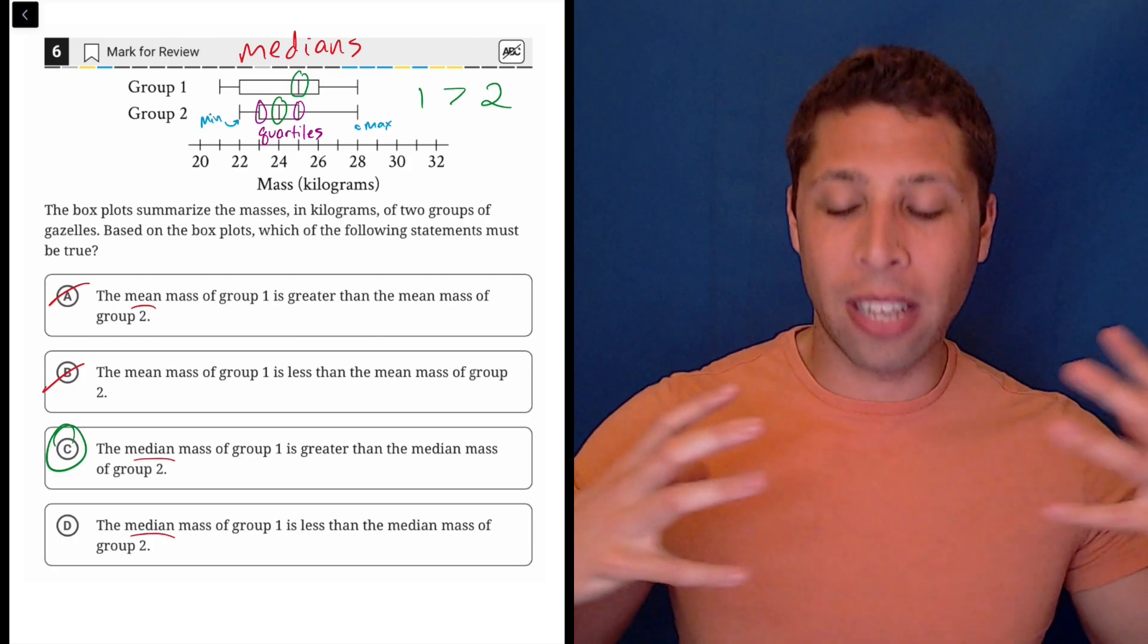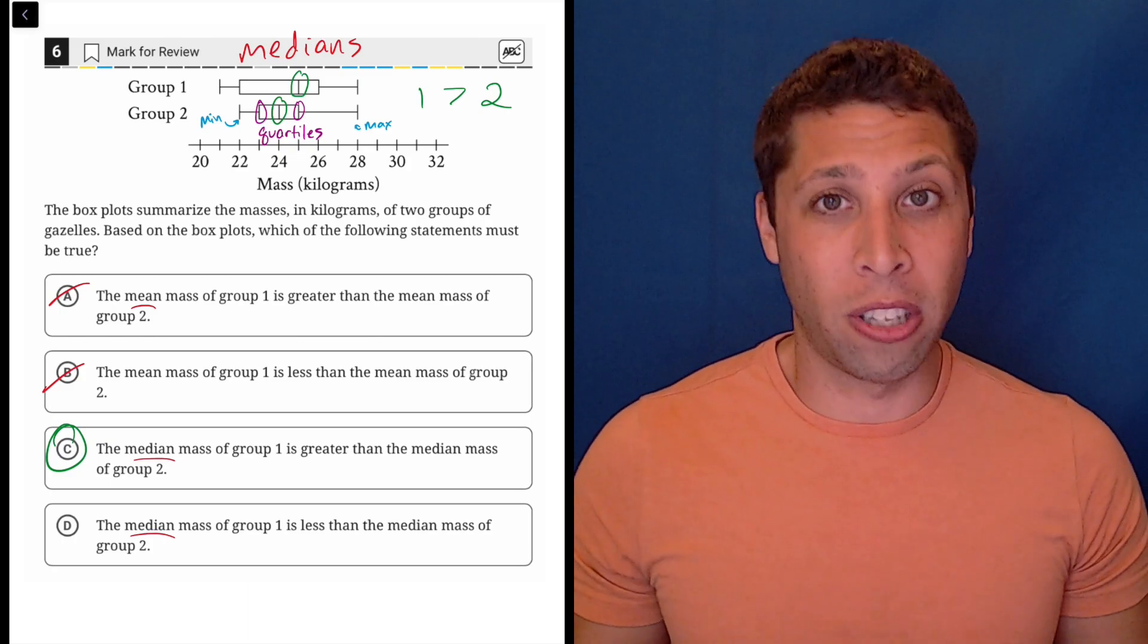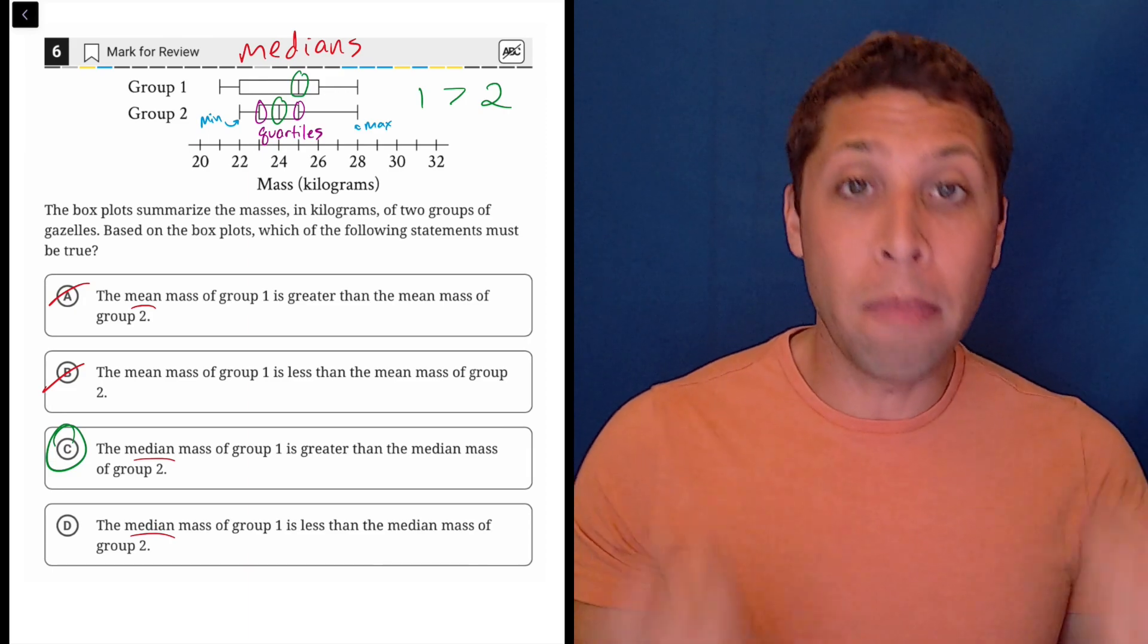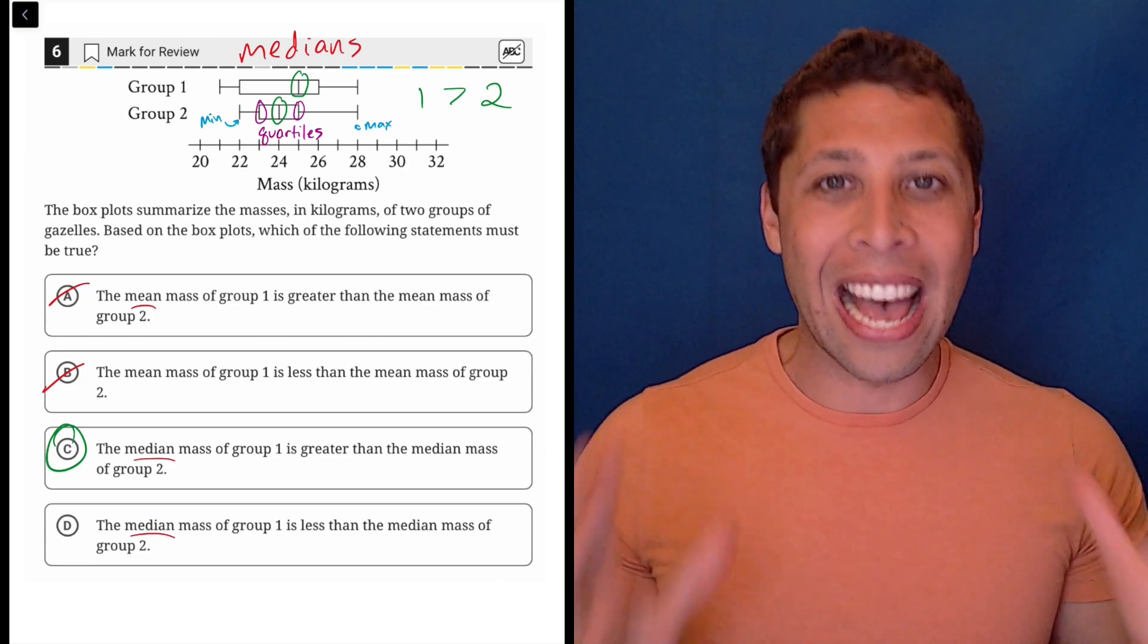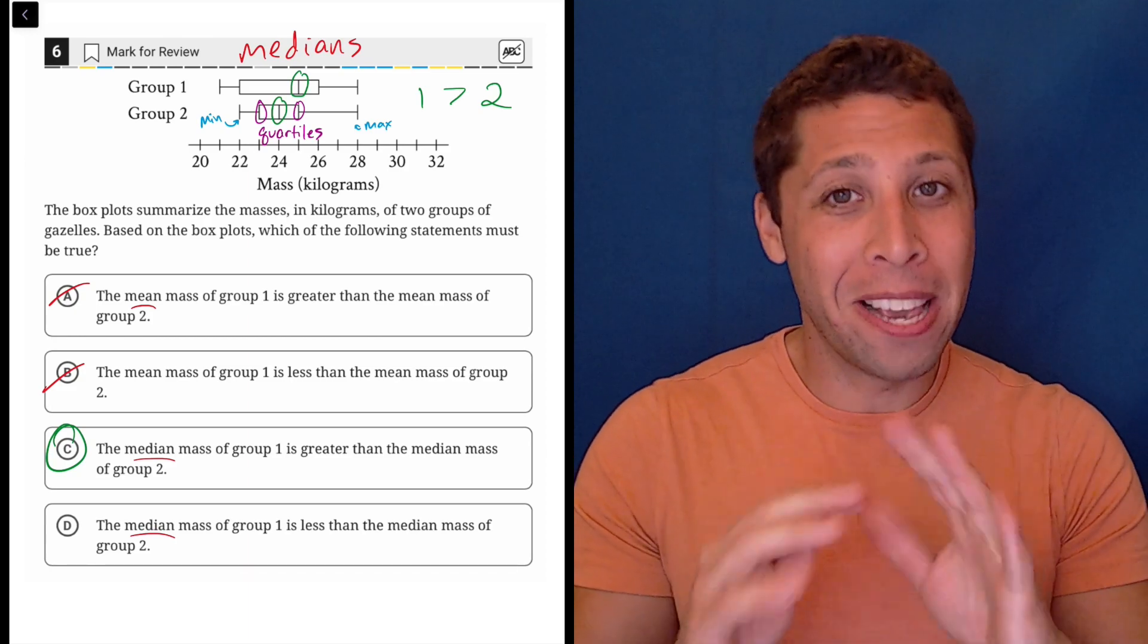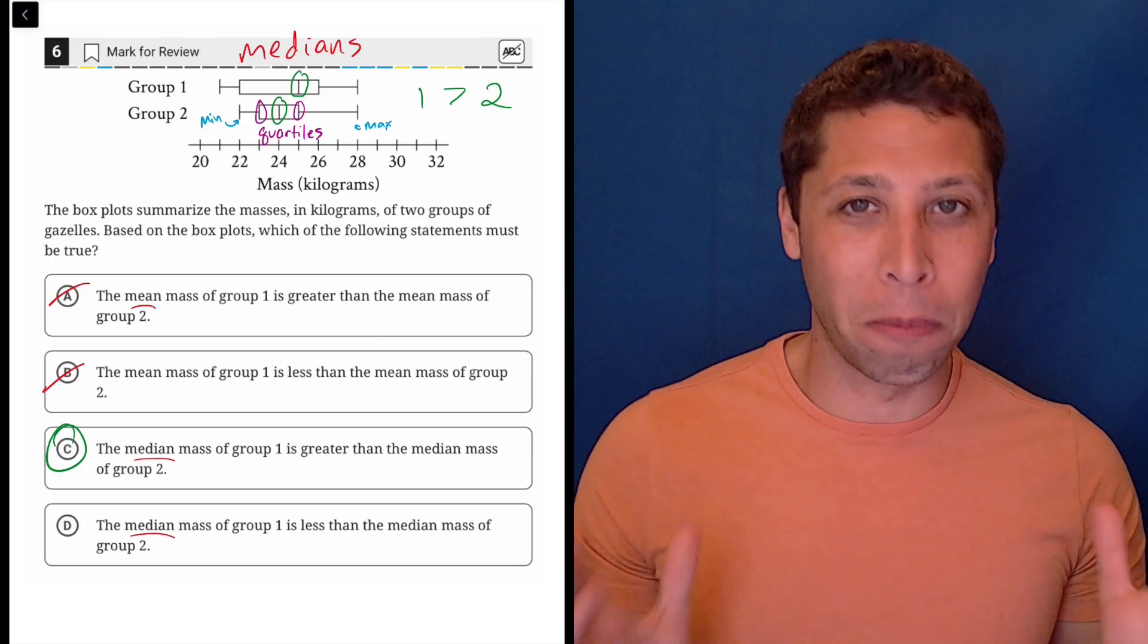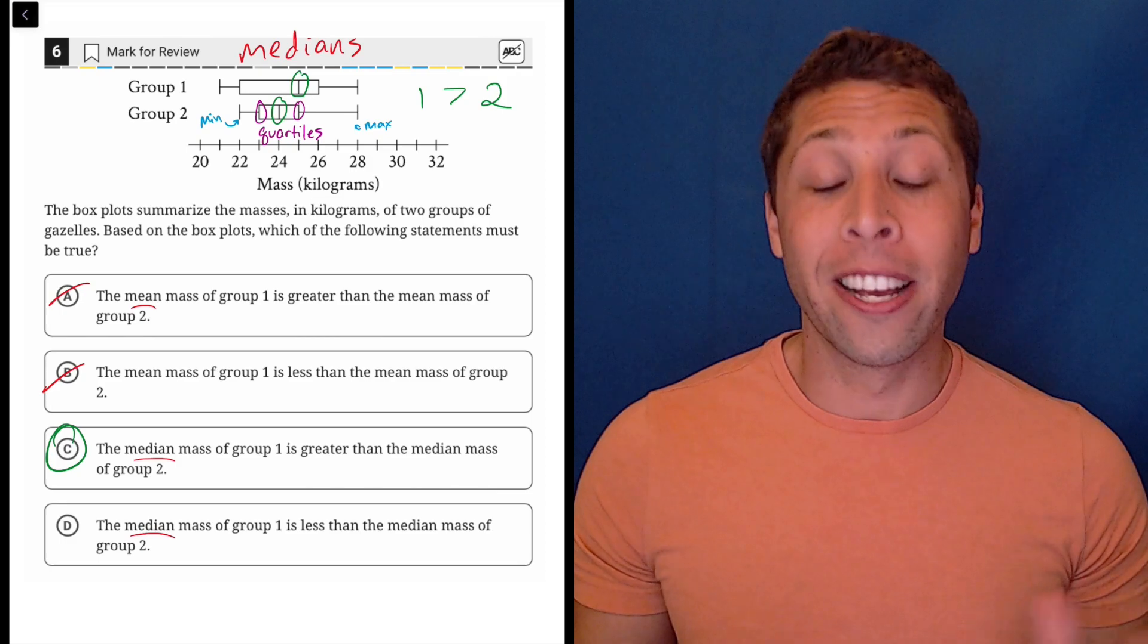So again, the idea I want you to take away for even easy questions about box plots is that they're all about medians. Medians and box plots go together. So if you're given one, at least start with that simple thought. It might be the case that just thinking about the word median is enough to get the question right, and I think here it's all you need to get this.